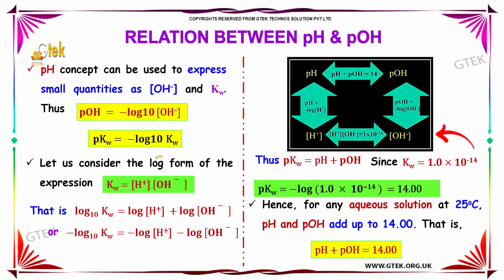The pH concept can be used to express small quantities such as OH- and KW. Thus, pOH equals minus log of the concentration of OH-. Considering the log form of the expression where KW equals H+ concentration times OH- concentration, we get: log KW equals log[H+] plus log[OH-]. Thus, pKW equals pH plus pOH. Since KW equals 10^-14, pKW equals 14. Hence, for any aqueous solution at room temperature, the sum of pH and pOH will always equal 14.